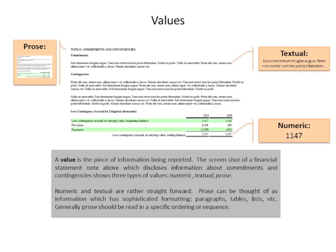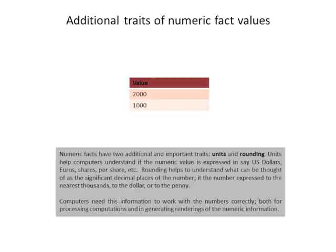If a fact value is numeric, there are two other traits that numeric value must have. If a fact is numeric, you clearly want to know the units, and knowing how the information is rounded is helpful. So additional numeric information contains those two traits. This is important for people reading a financial report, but it's even more important for computers trying to process a financial report.